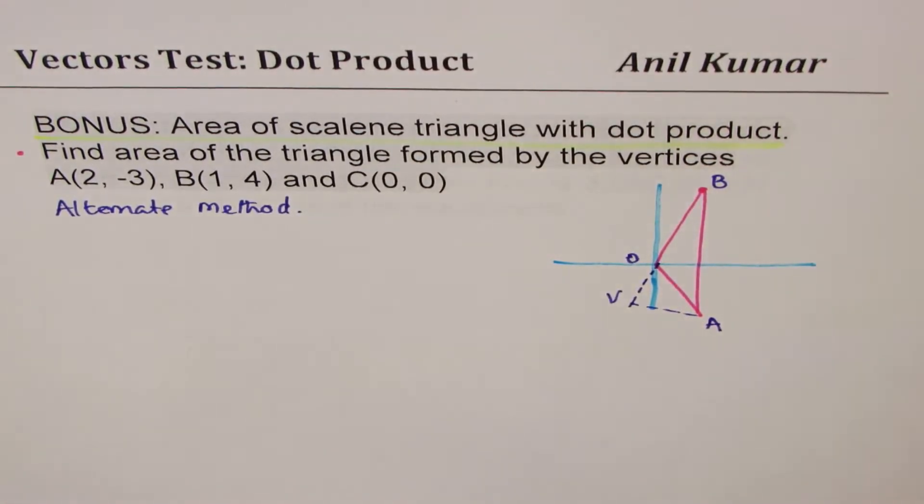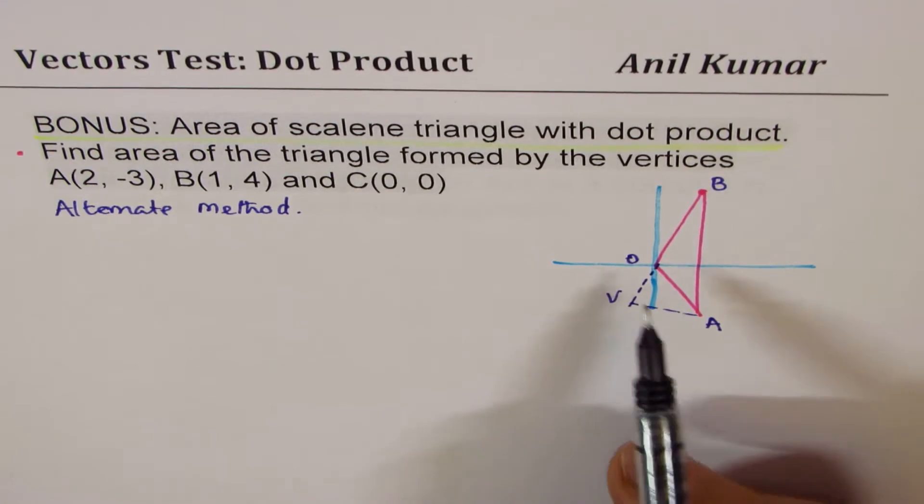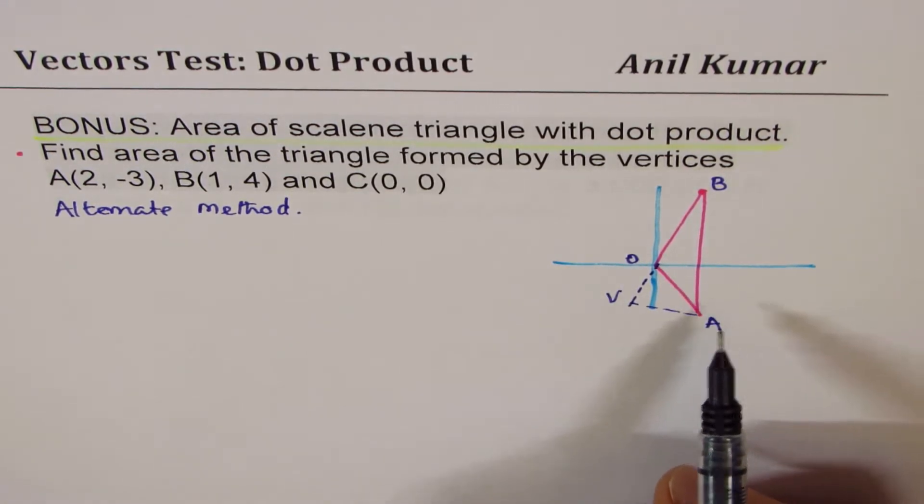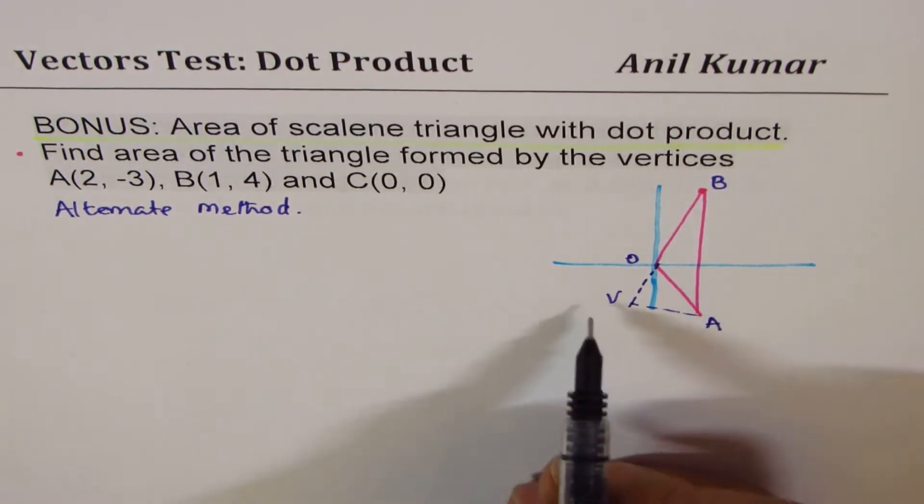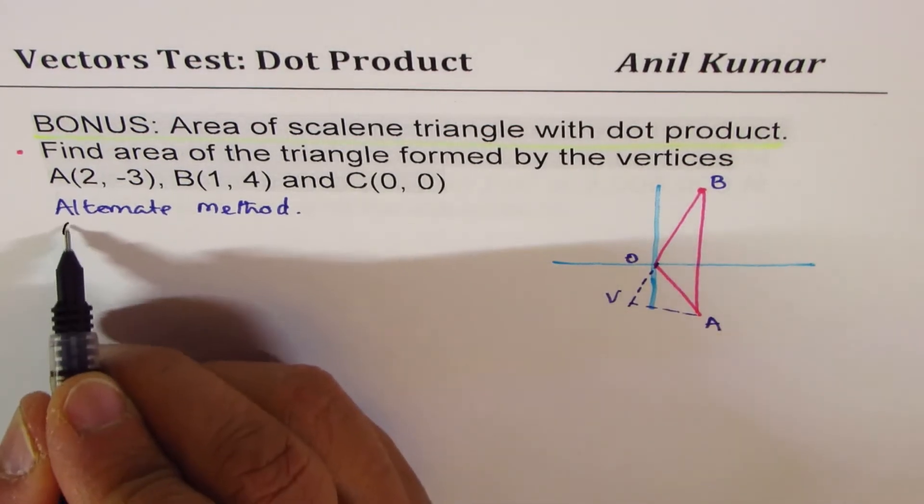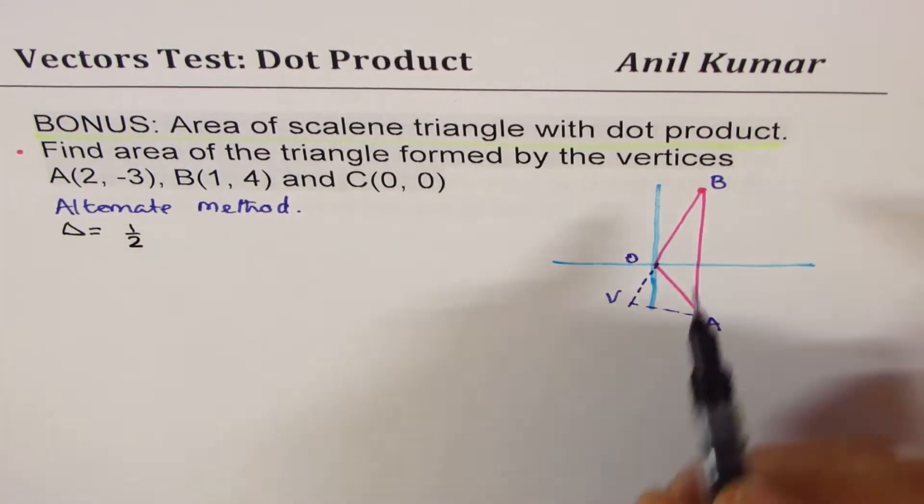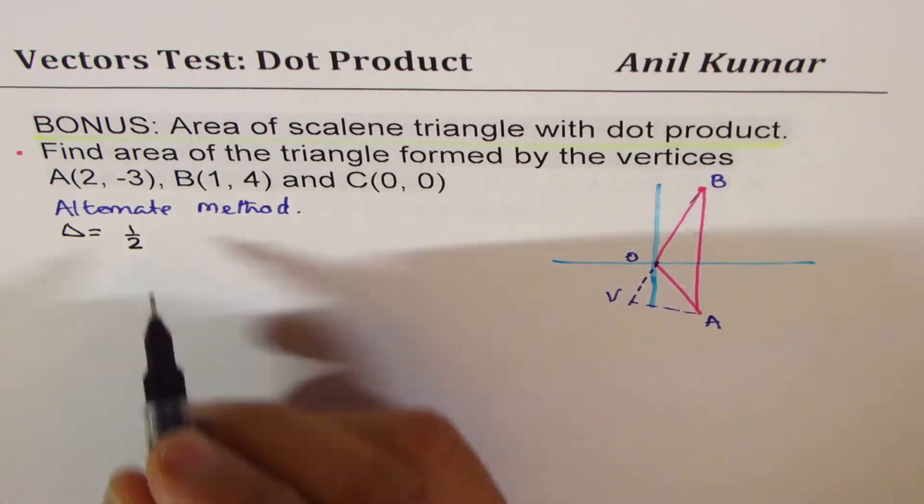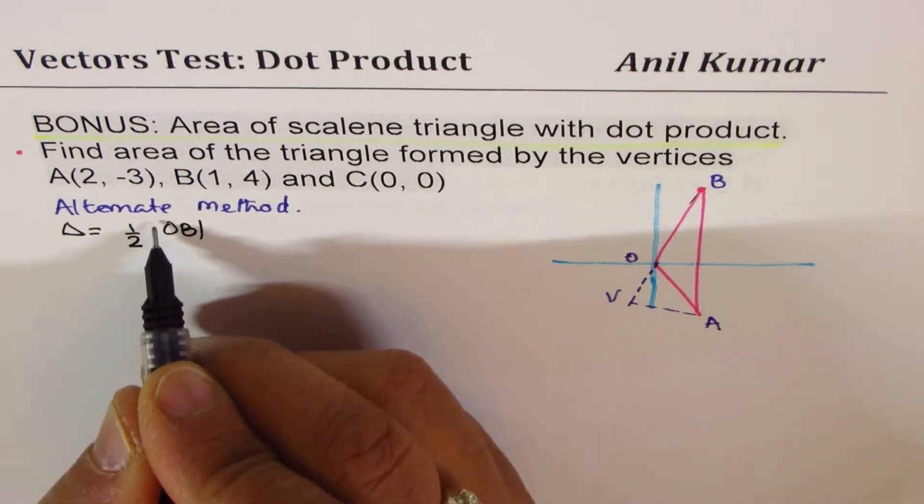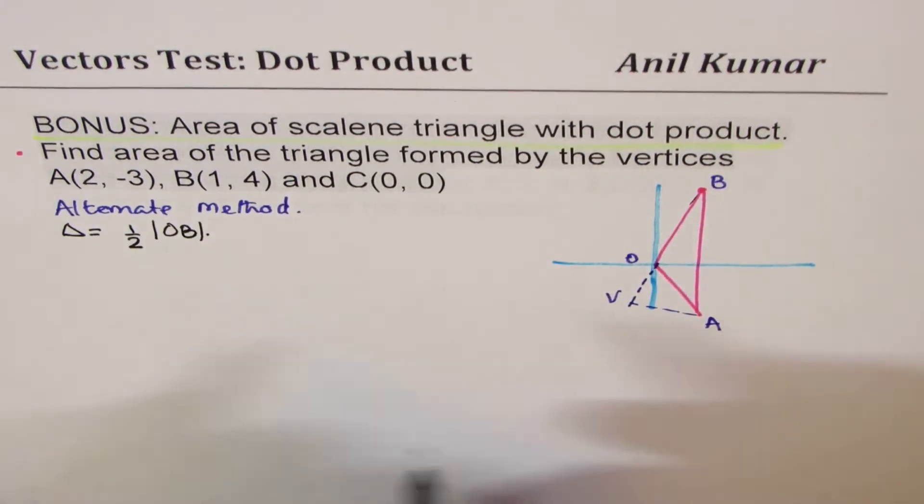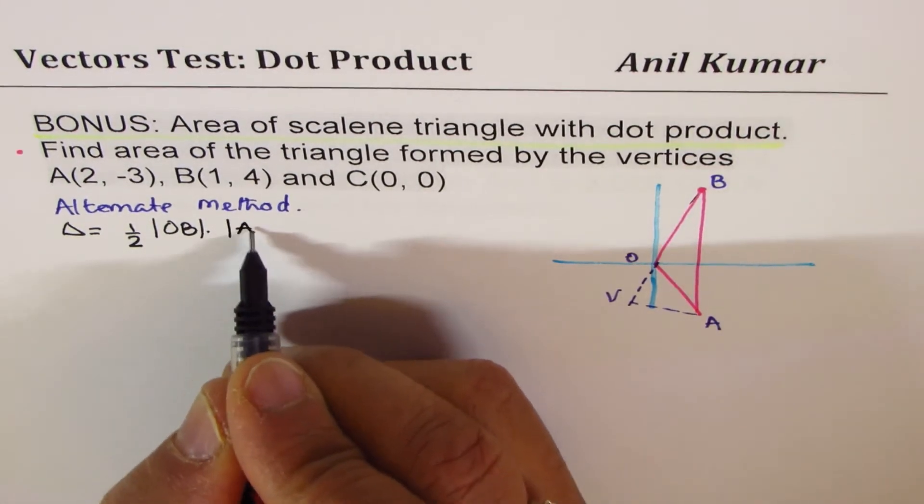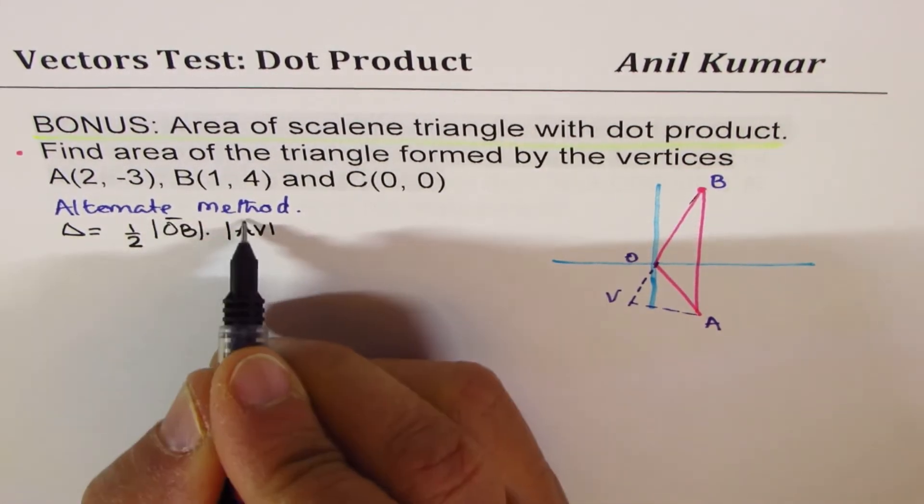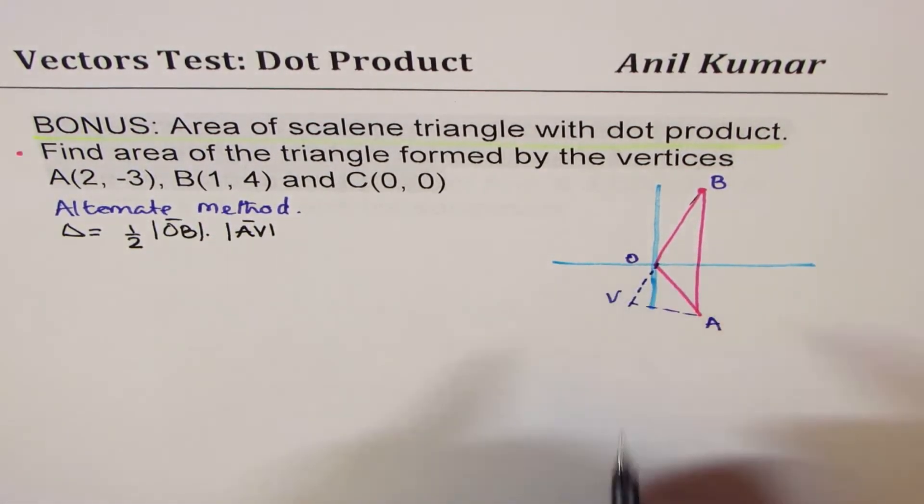This is actually a better method to find area of any scalene triangle. The idea is that area of the triangle will be half of the base, so the base is OB, times the height which is AV. The magnitude of these two will give us the area.